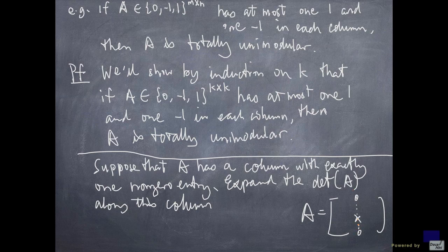And if you do that, there's only one term left and the term is going to be this x, right? x, which we know is either 1 or minus 1 because that's the only possibility for a non-zero entry in A times the determinant of let's say Aij